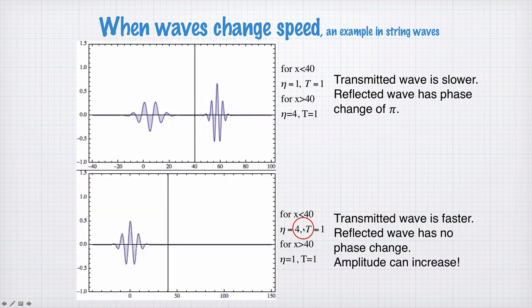What if we go the other way? So we start with a density of 4 and go to a density of 1. So we start off like this.